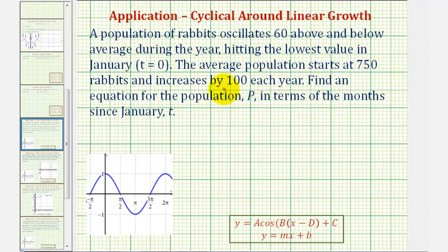So our equation will have two parts. We'll have a trig equation for the part that oscillates 60 above and 60 below average during the course of a year, and then we'll have a linear part for the population that starts at 750 and increases by 100 each year. Let's begin by focusing on just the oscillation part, which will be a trig function.